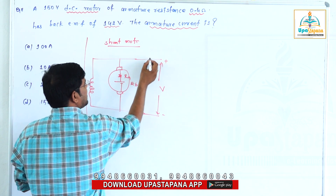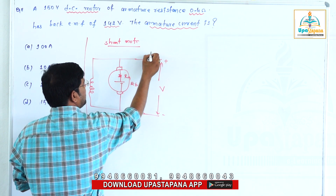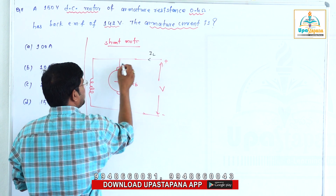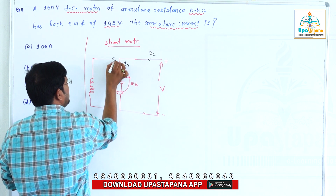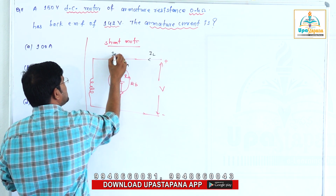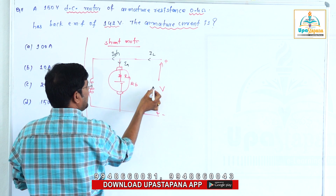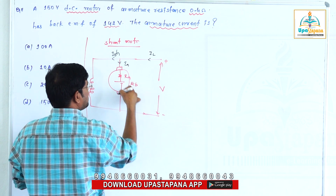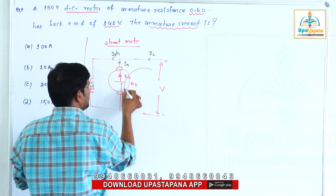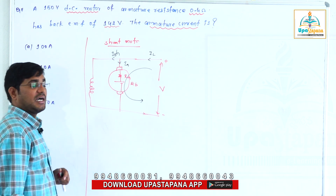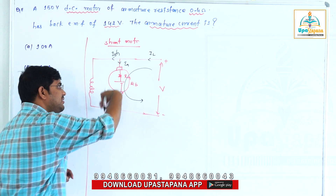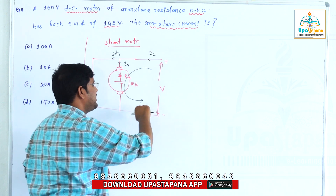This is the load current, this is the armature current, this is the field current. This shows the current direction and the delivery direction in the circuit.